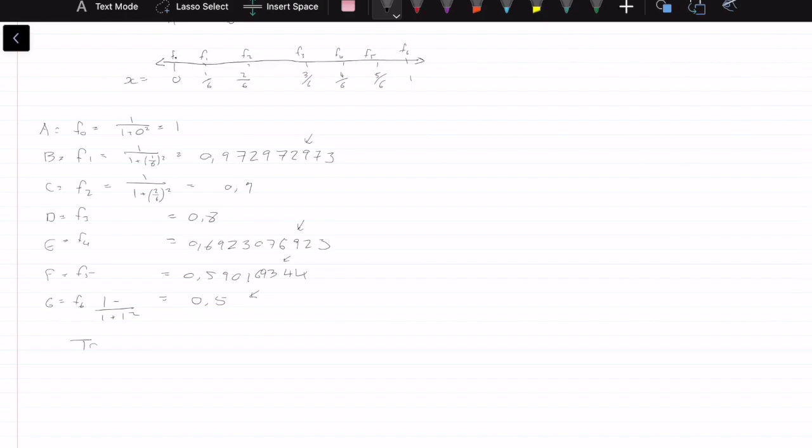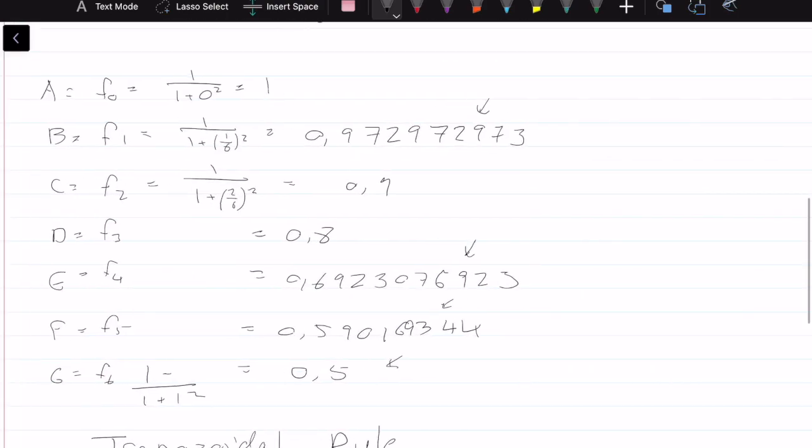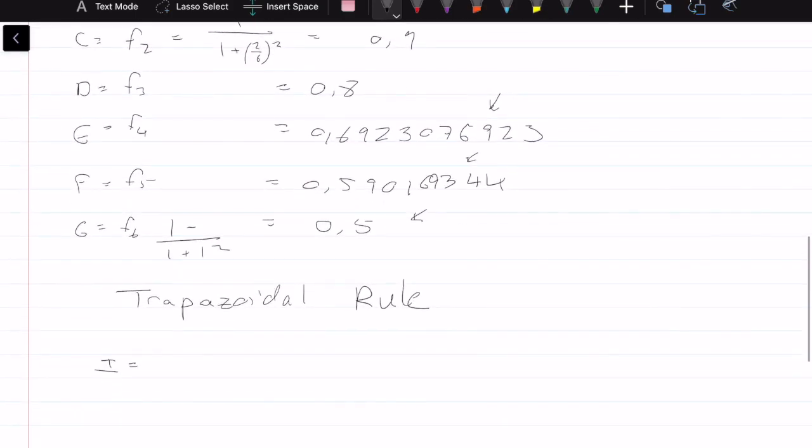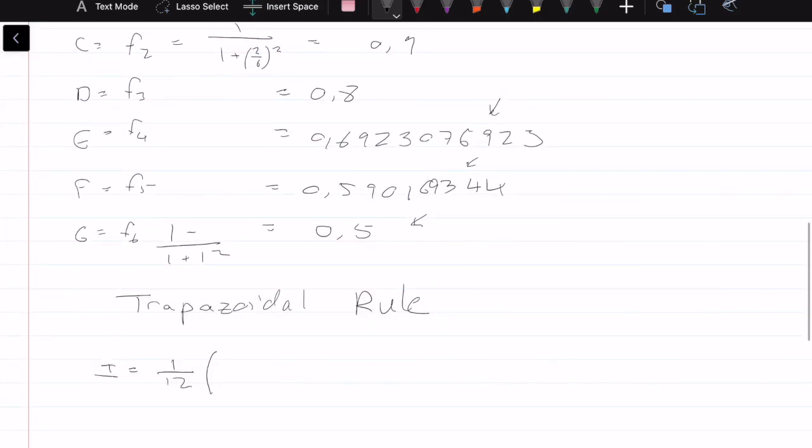Now we can implement the trapezoidal rule. The trapezoidal rule goes like this. The integral is equal to H over 2, so our H was 1 sixth, 1 sixth over 2 is 1 twelfth. Then we have the first value, which I would have stored in my calculator as A, plus 2 times B plus C plus D plus E plus F, close the bracket and the last value plus G. The answer that we get with the trapezoidal rule is 0.784241.